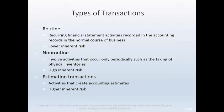Routine transactions involve recurring financial statement activities recorded in the accounting records in the normal course of business — examples include sales, purchases, and cash disbursements — and have low inherent risk. Non-routine transactions occur only periodically, such as taking physical inventories or calculating depreciation expense; inherent risk may be high because they are not part of the normal transaction flow and may require specialized skills. Estimation transactions are activities that create accounting estimates and carry high inherent risk because they involve management judgments or assumptions.